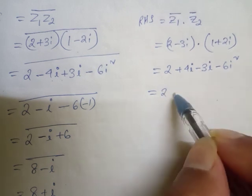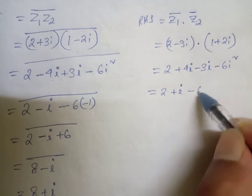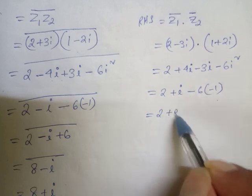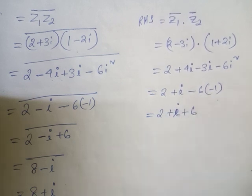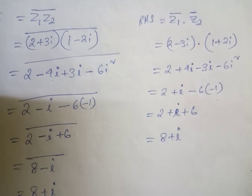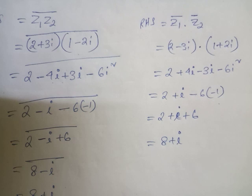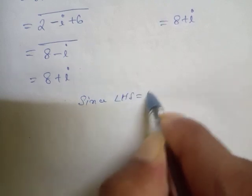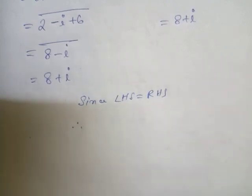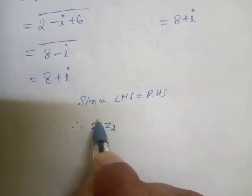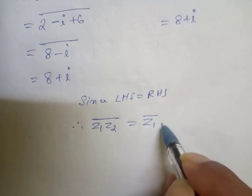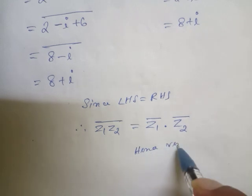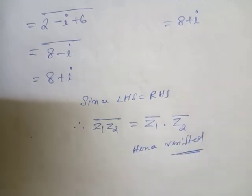Now simplify: 2, then 4i - 3i gives +i, and -6·(-1) gives +6. So 6 + 2 = 8, and RHS = 8 + i. Since LHS equals RHS, therefore z1·z2 whole bar = z1 bar · z2 bar. Hence verified. This is the answer for Roman 3.